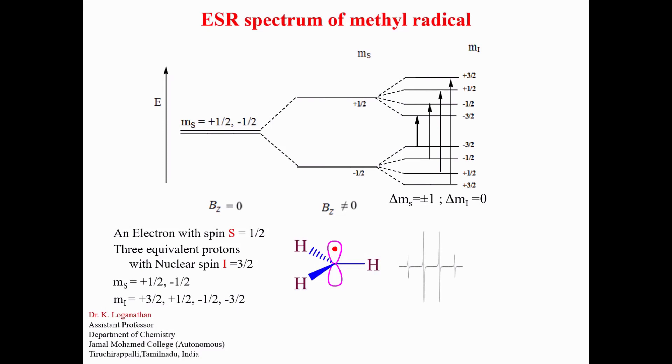The relative intensities of the four peaks are in the ratio one to three to three to one.